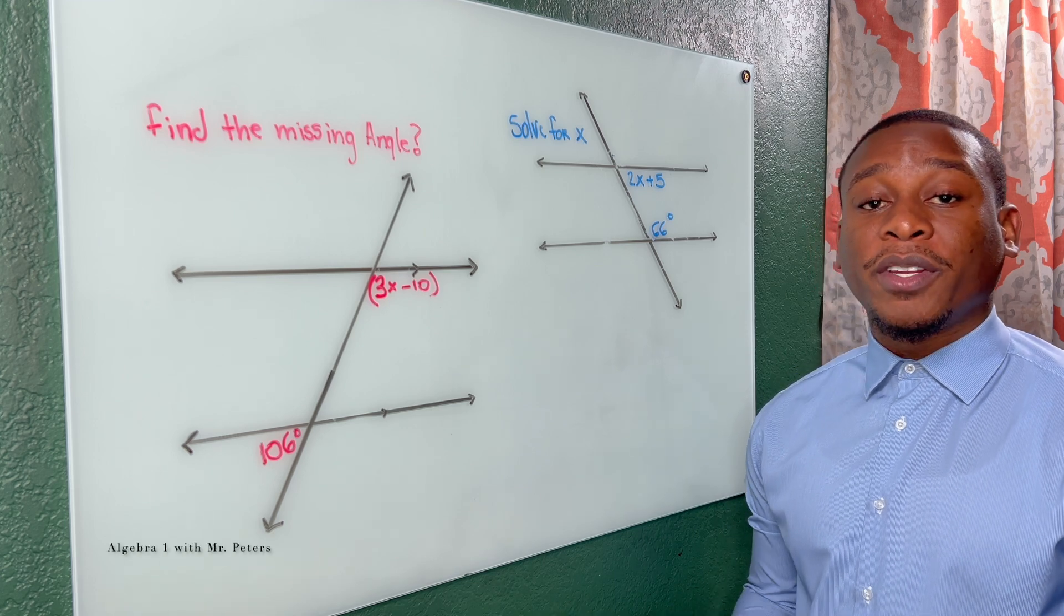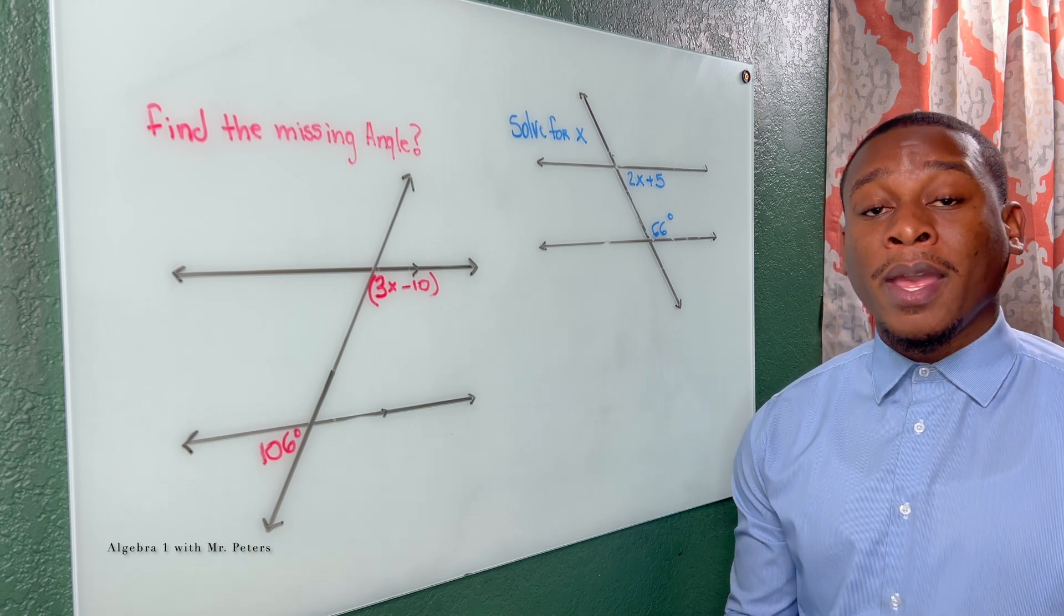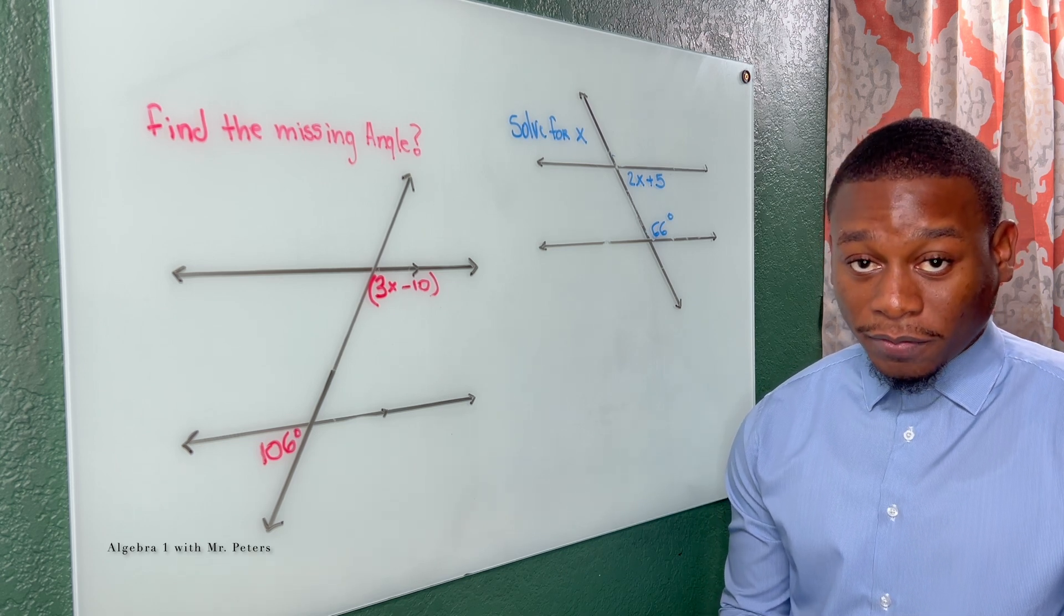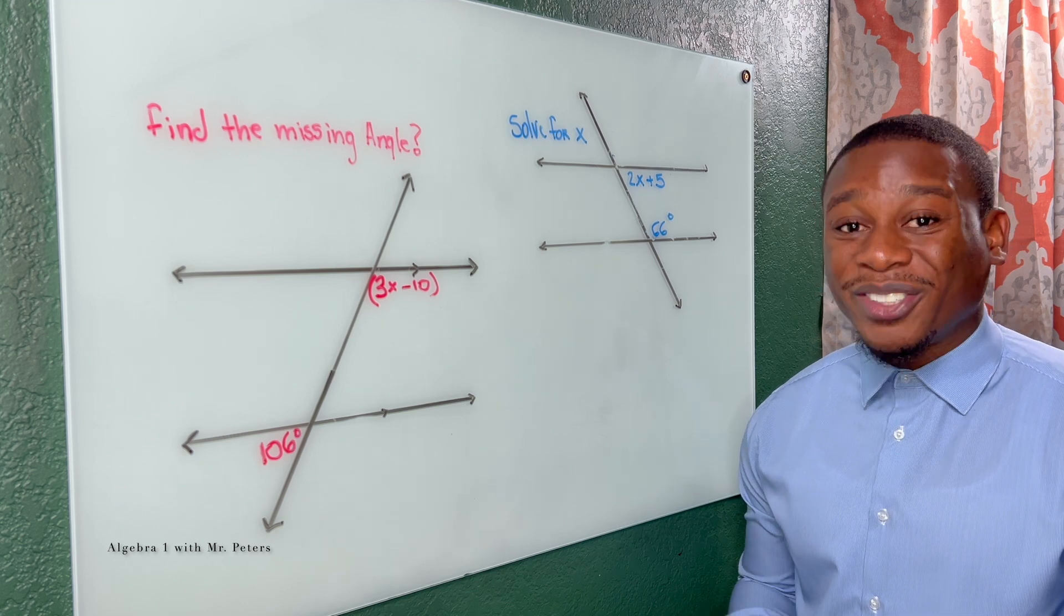What's good math family? In this video we're looking at three examples of parallel lines cut by transversals and I need you guys to stick to the end of this video because our last example is going to be parallel lines cut by more than one transversal.